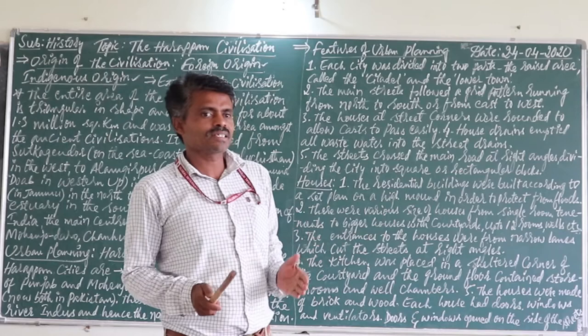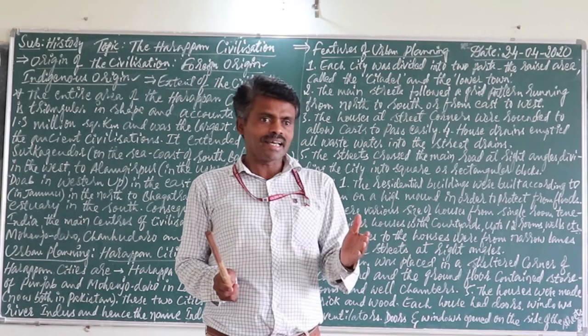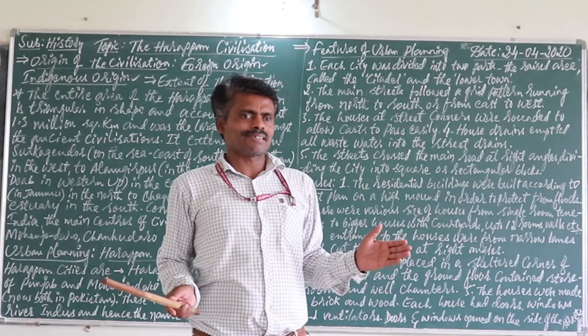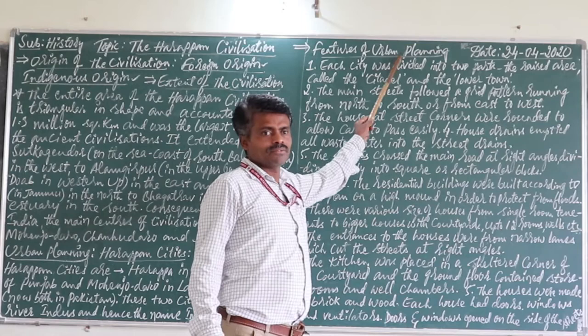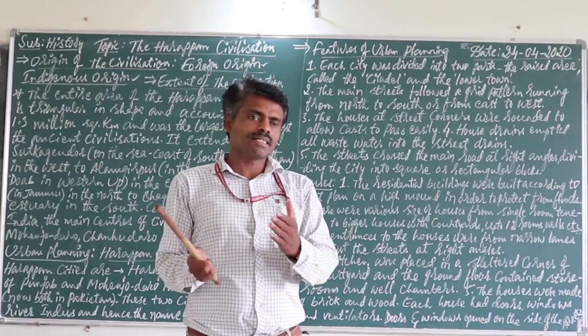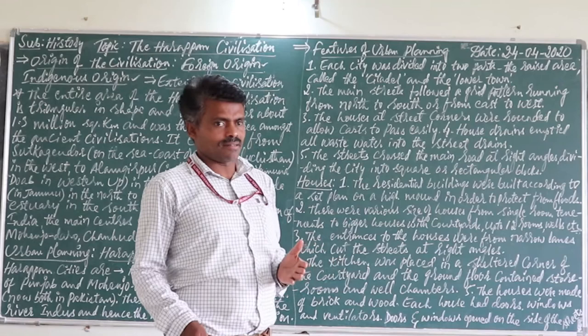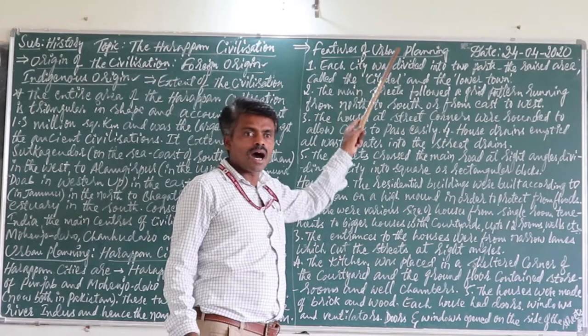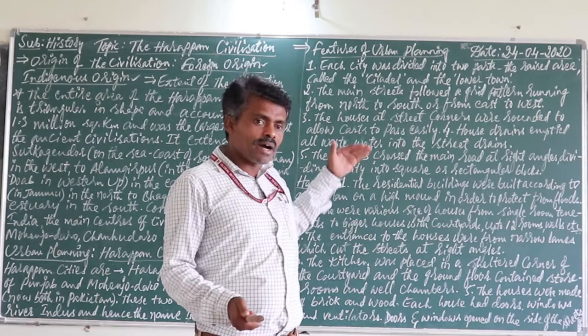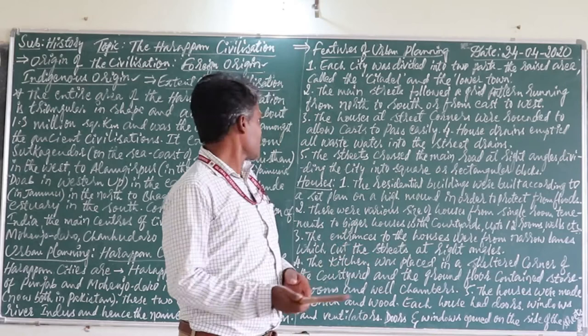What archaeologists found and recorded in their writings is that Harappan cities were properly well-planned cities. Now let me take the features of urban planning — also called characteristics. By these points you will come to know how the Harappan cities did their urban planning.